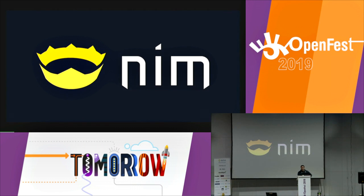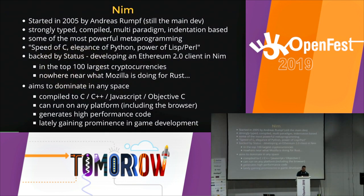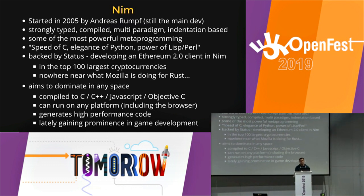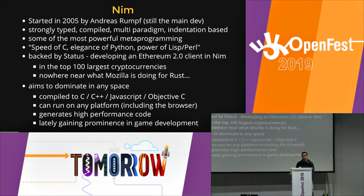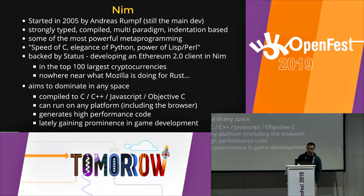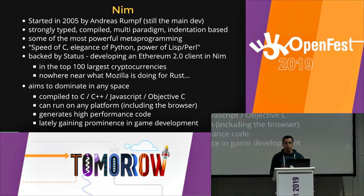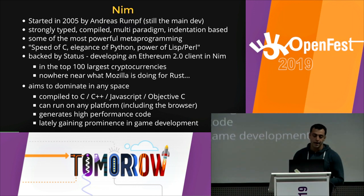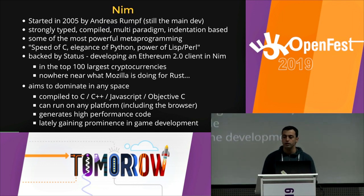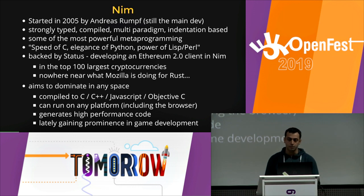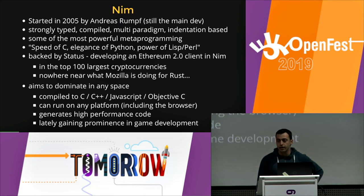Let's get on with it. This is NIM. Its logo is a crown because it's meant to be the one language to rule them all. It was started in 2005 by Andreas Rundf. It's a strongly typed, compiled, multi-paradigm, indentation-based language, and it has some of the most powerful metaprogramming out there. It's backed currently by one of the top 100 cryptocurrencies.